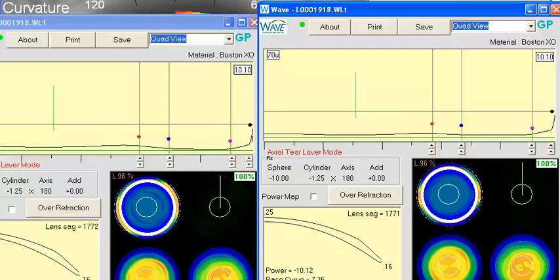And if that fails, once again, I would recommend going to the tangential design. Although it will fit slightly flatter, it will give you a little bit more truer representation of this peripheral cornea out here.